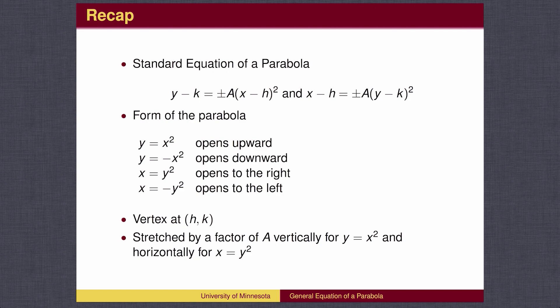To recap, the y equals x squared parabola points upward. The x equals y squared parabola points to the right. A negative sign will flip the graph, so that y equals negative x squared points downward, and x equals negative y squared points to the left.